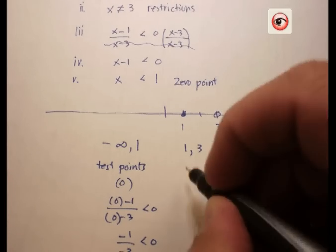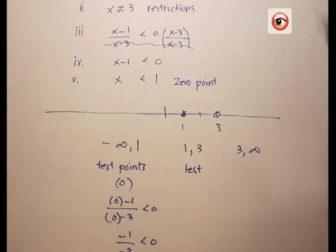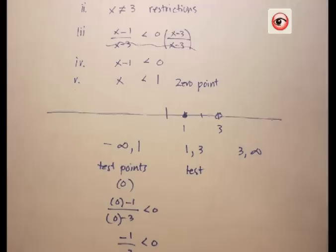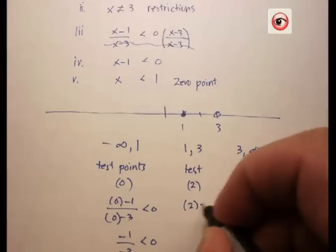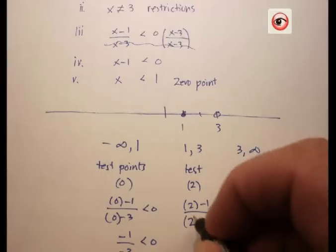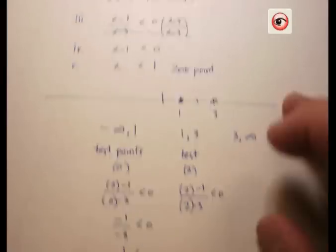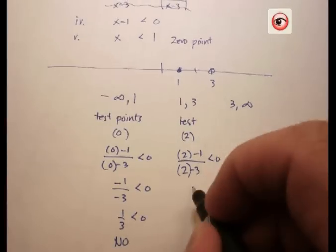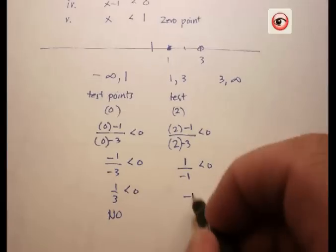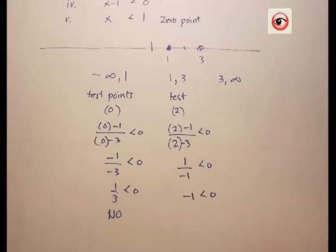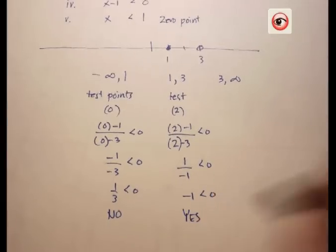Let's try the next test point between one and three. Let's try two. Plug it into the equation: two minus one over two minus three is less than zero. Two minus one is one, two minus three is negative one, and that turns out to be negative one is less than zero. Is that true? Yes it is. When I go back to my original problem, that means I'm going to shade everything in this interval, everything between one and three.